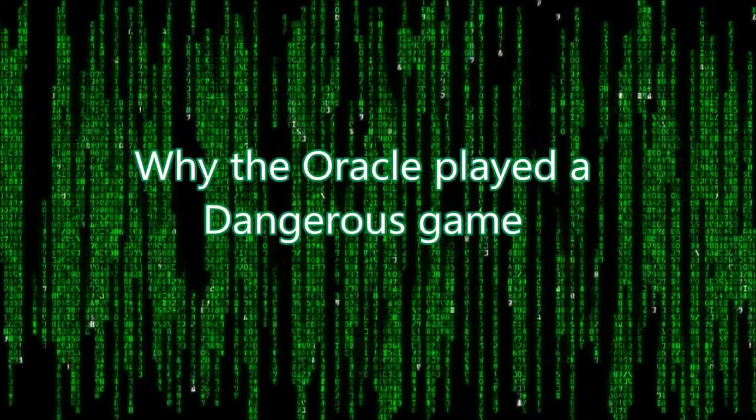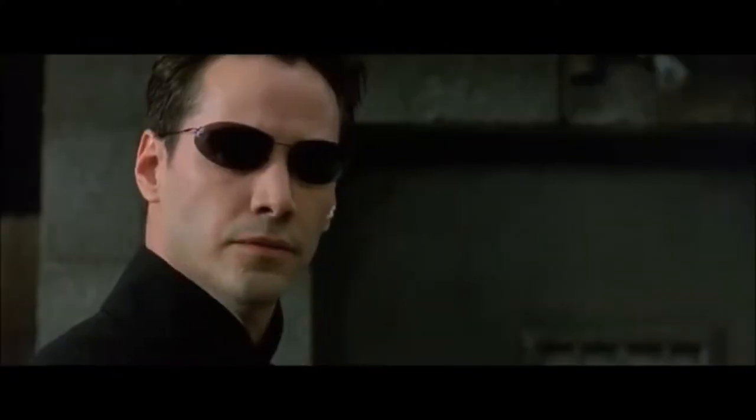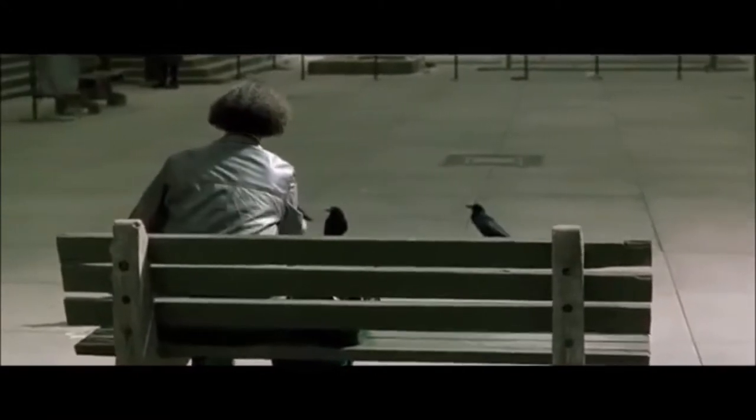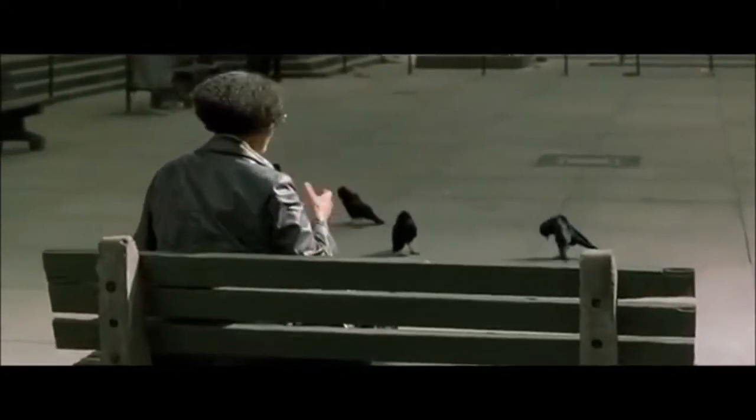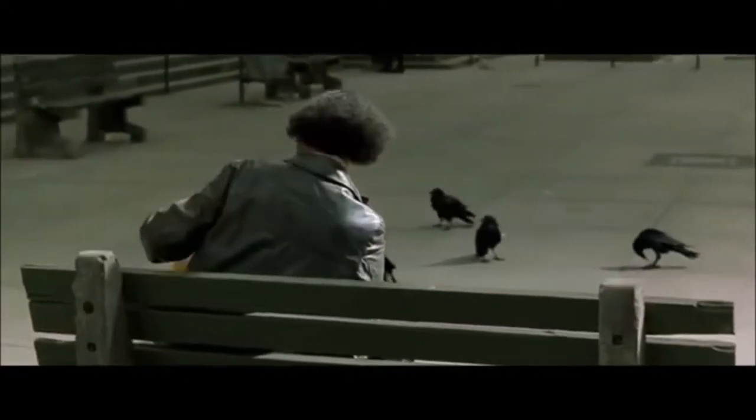Now to one of my personal favorites — why the Oracle played such a dangerous game. My theory: the Oracle is actually obsolete and marked for deletion. Upon the seventh Matrix — the new version — she'll no longer be needed, at which point she'll turn exile. So she is now fighting for her own survival.